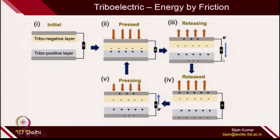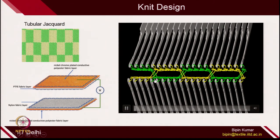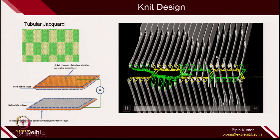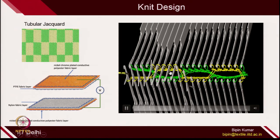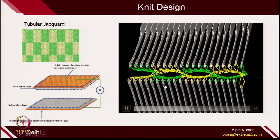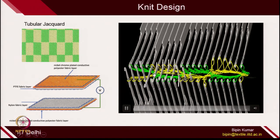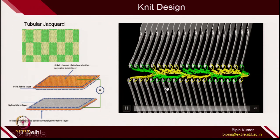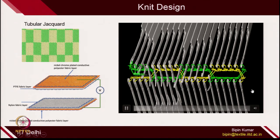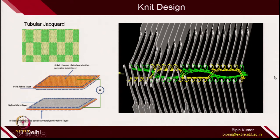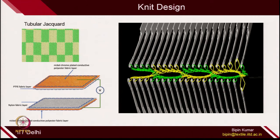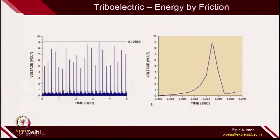In energy harvesting, knitting plays a very important role. Especially tubular jacquard — I found literature where tubular jacquard is actually used. Two types of materials: triboelectric-positive material (the yellow one) and triboelectric-negative material (the green one) are placed opposite to each other. Whenever pressure is applied, the charge is accumulated, and with the help of conductive fabric on top, you can harvest those charges and harvest the energy. By simple tapping, you can see how much voltage can be generated — up to 9 volts by simple tapping of two layers of fabric.